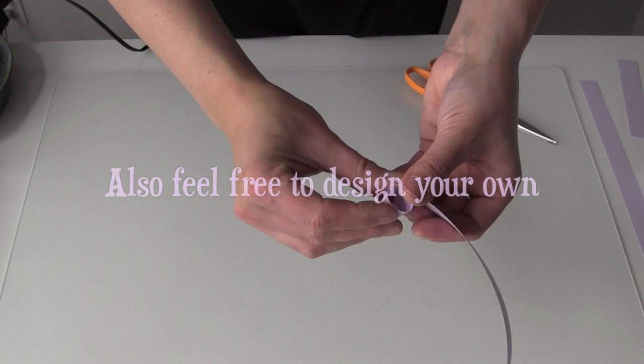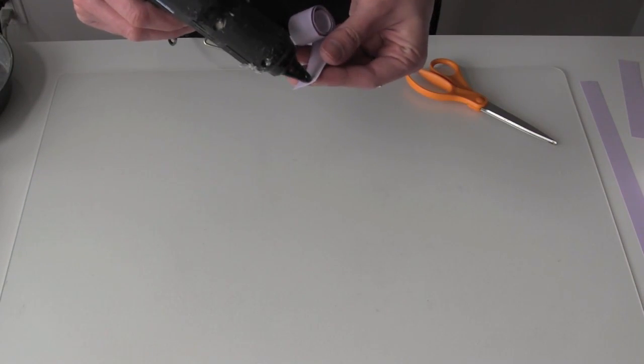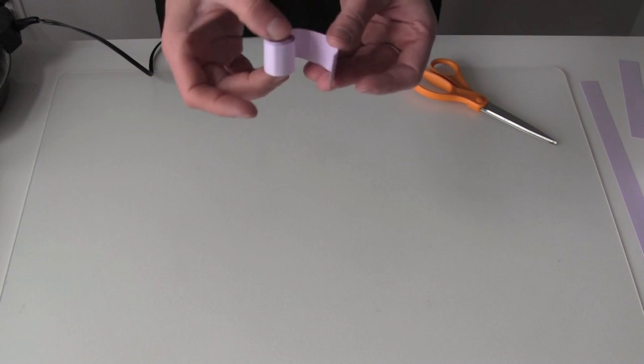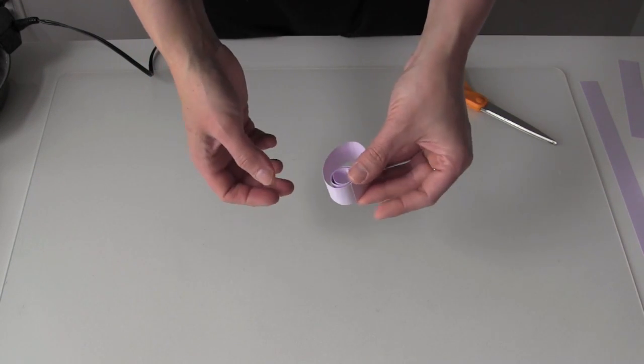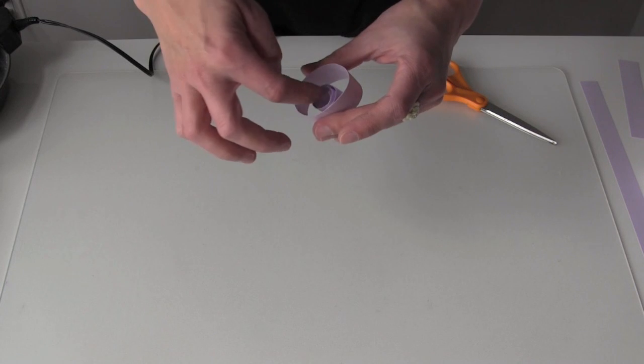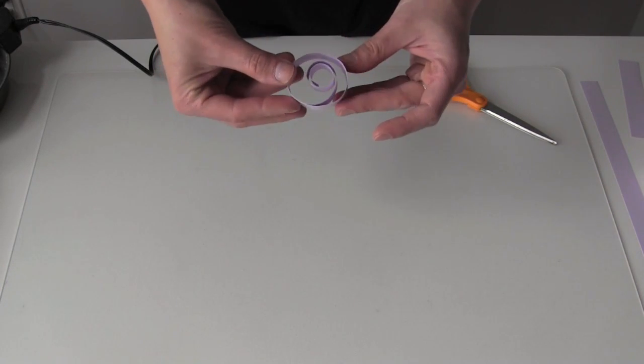This next one I'm going to do a spiral circle. So I'm going to roll my paper up really tight. Hot glue the end. And then unroll it a little bit and stick it to the outside. And then I'm going to just adjust the inside so you can see the spiral shape.